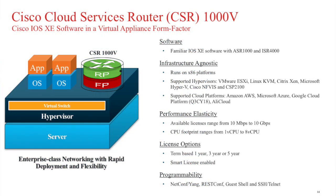Let's go deeper into the CSR. The CSR 1000V is not a new product — it's been on the market for several years. It's a virtual router, a virtual IOS that can run on almost anything: VMware ESXi, KVM, Cisco NFVIS as part of our enterprise NFV solution, or the CSP 2100. It's officially supported on Microsoft Azure, AWS, Google Cloud — coming in Q3 CY18 — and Alibaba Ali Cloud, with more clouds being added.